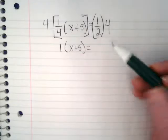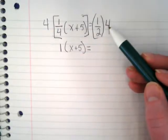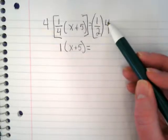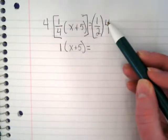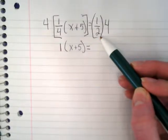And on the right side of my equation, because I multiply it by 4 on the left, I have to do the same thing to the right. I'm going to do 1 times 4, which is 4, and divide by 2. What's 4 divided by 2? 2.